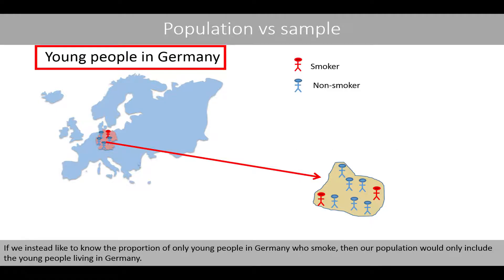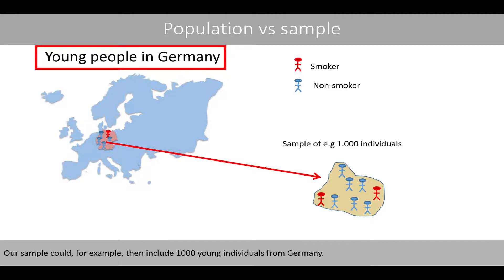If we instead like to know the proportion of only young people in Germany who smoke, then our population would only include the young people living in Germany. Our sample could, for example, include 1,000 young individuals from Germany.